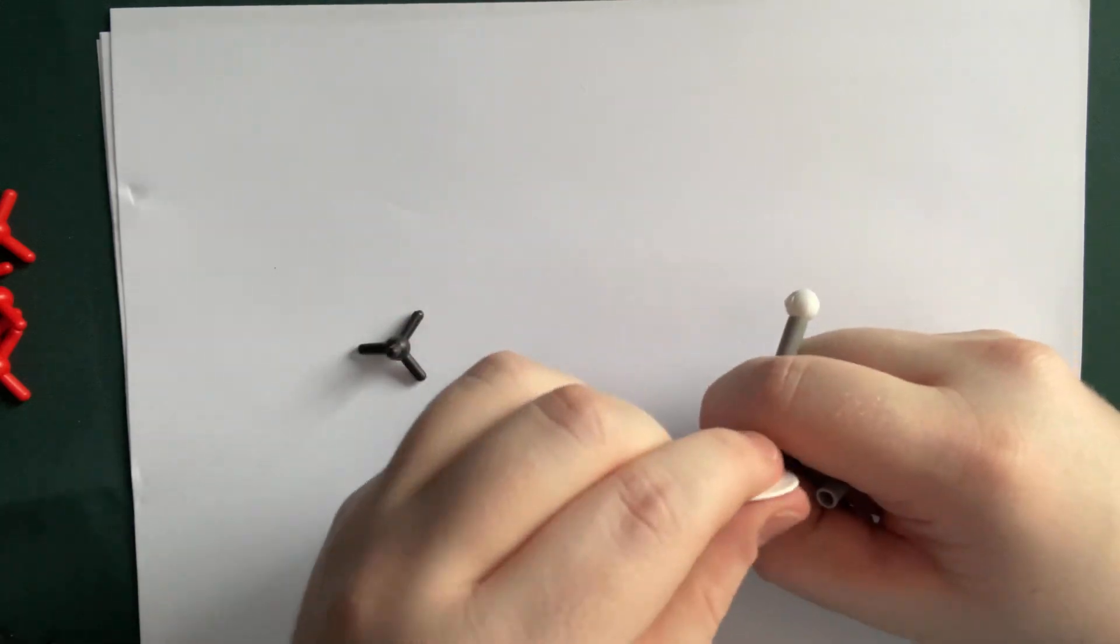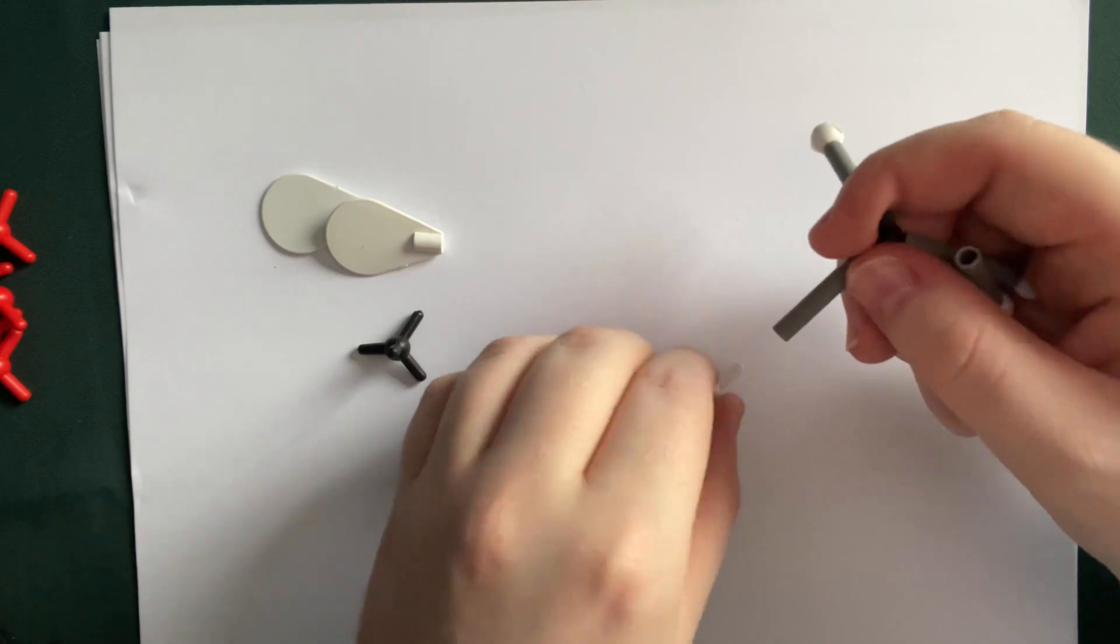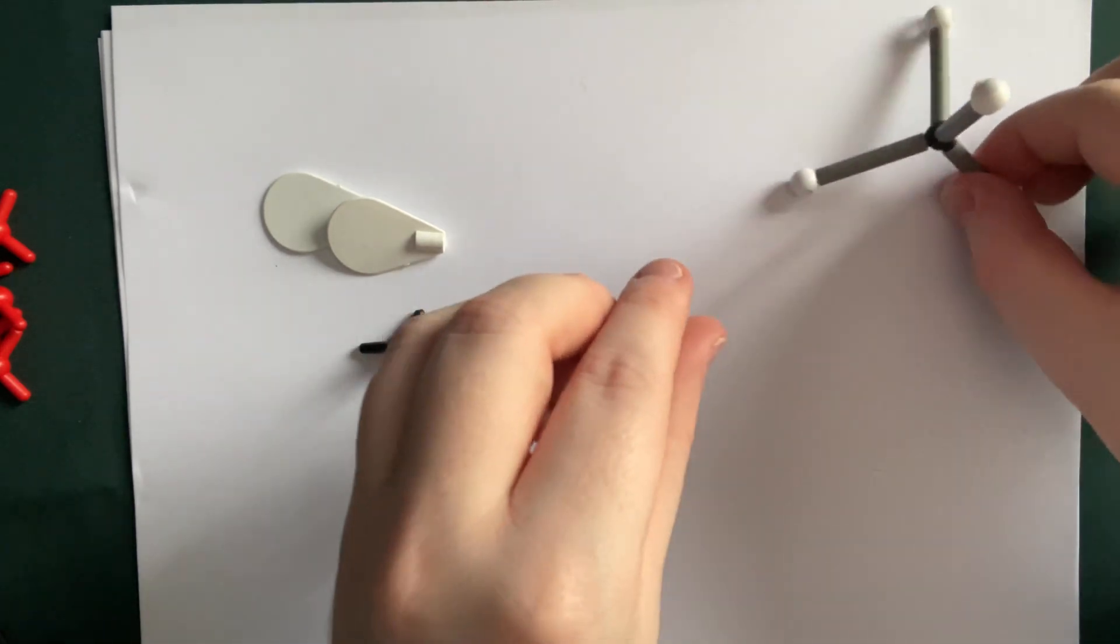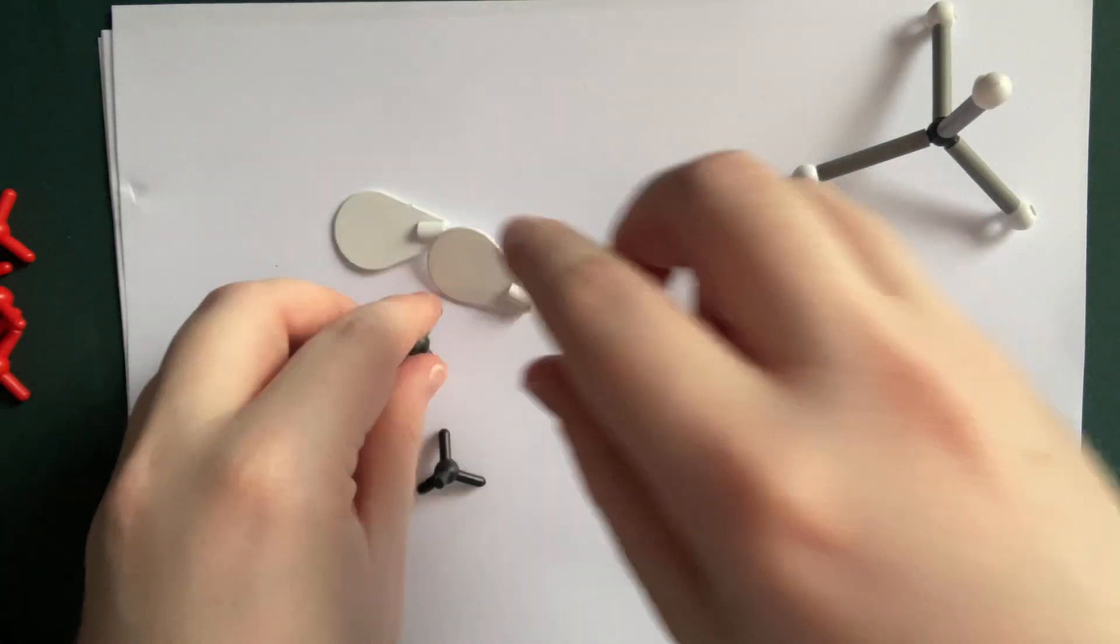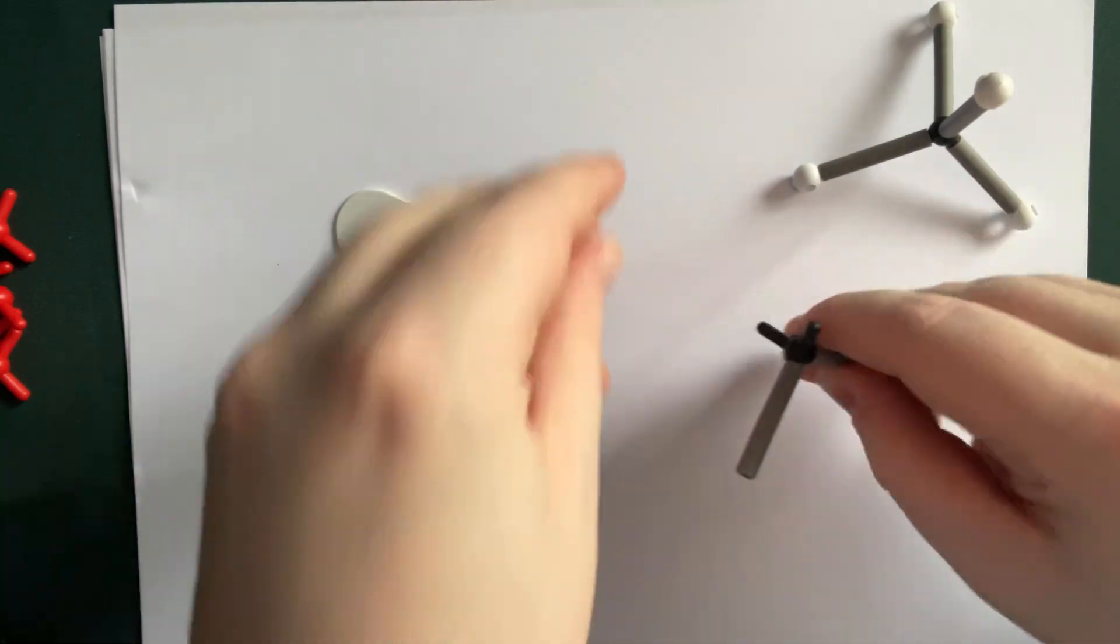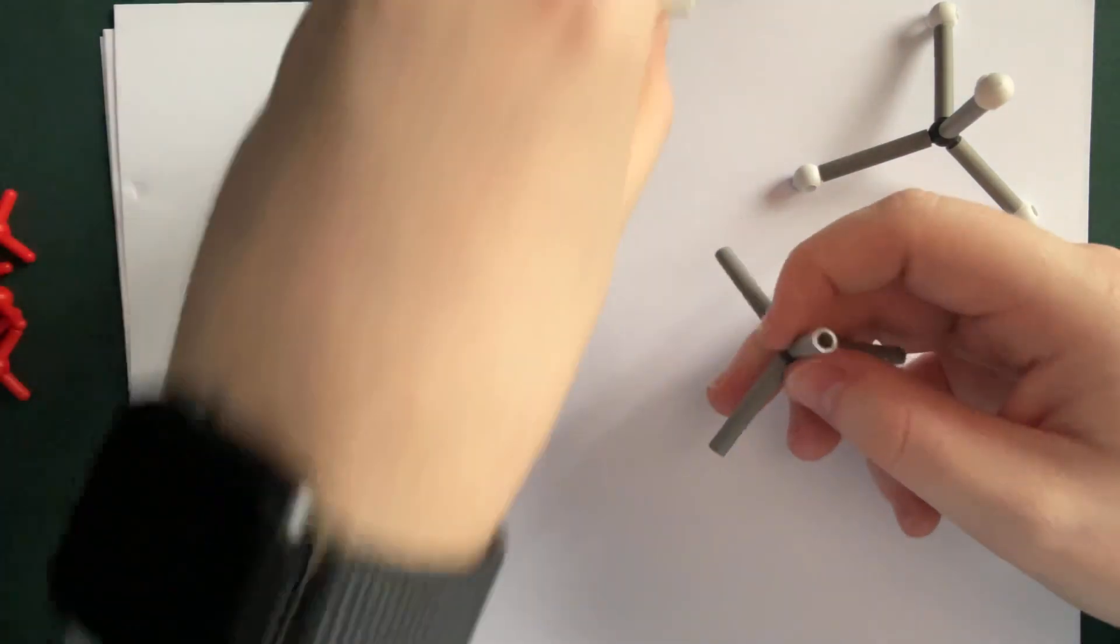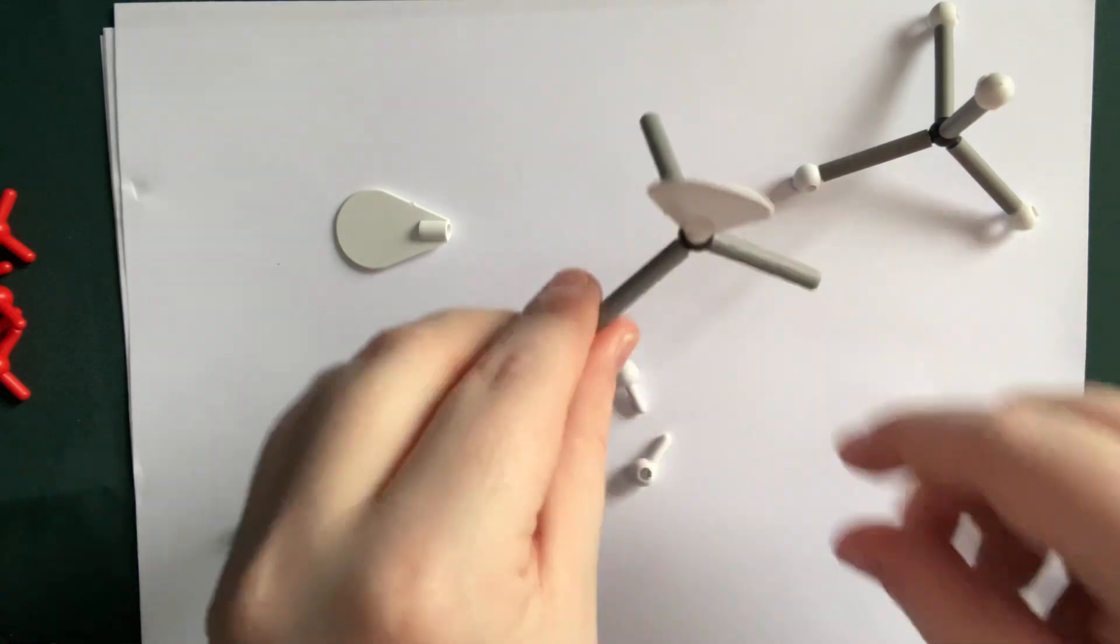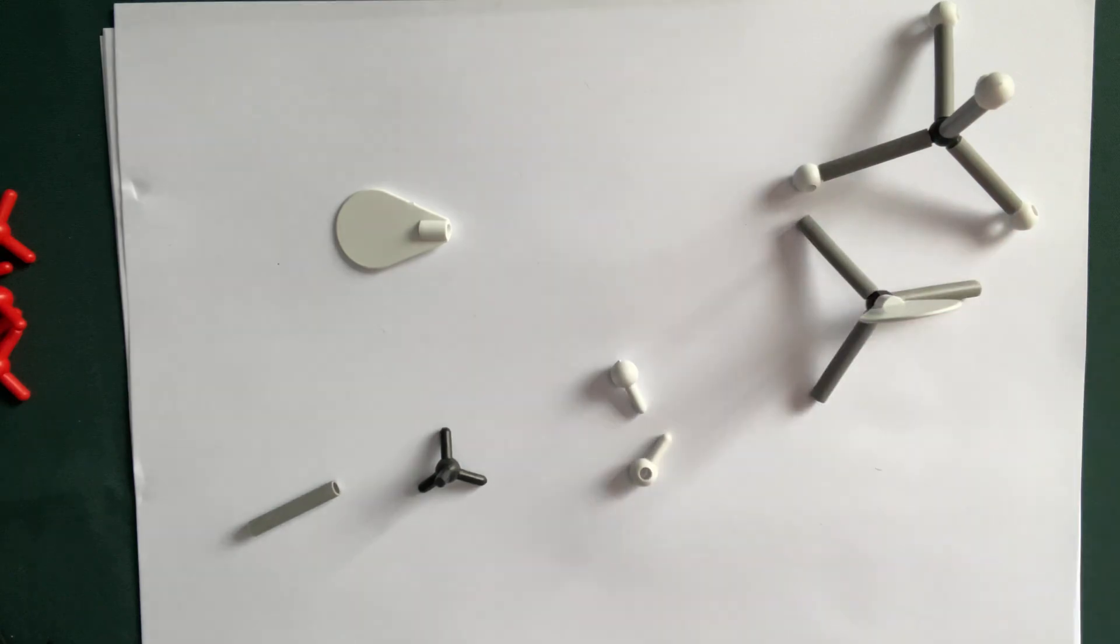All right, so we would like you to build the electron pair structure. We want you to build the terminal structure, then you take another one, so let's quickly build that. All right, and remember you remove one of them, and you add a lone pair, then you get the trigonal pyramidal.